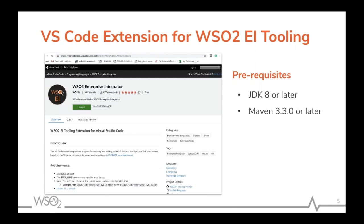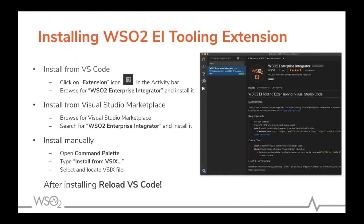For installation, VS Code provides three main options. First, you can click the extensions icon in the activity bar, search for WSO2 Enterprise Integrator, and install from there. Second, you can use the Visual Studio Marketplace website, search for the extension, and click the install option, which will automatically open your existing VS Code instance.